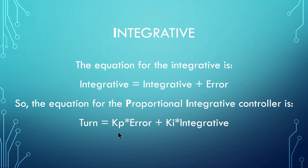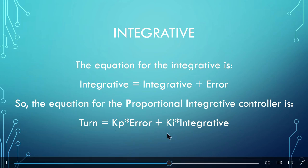The equation for the proportional integrative controller is turn equals kp times error plus ki times integral. The pseudocode is shown on the screen.